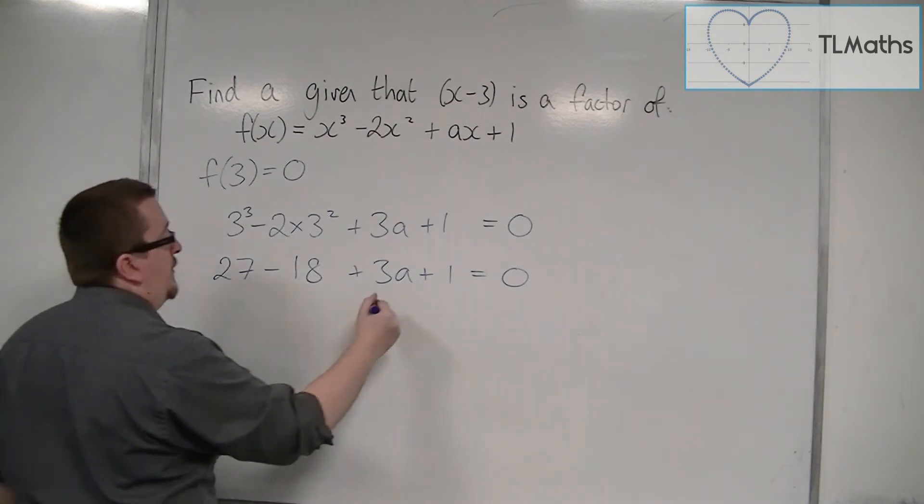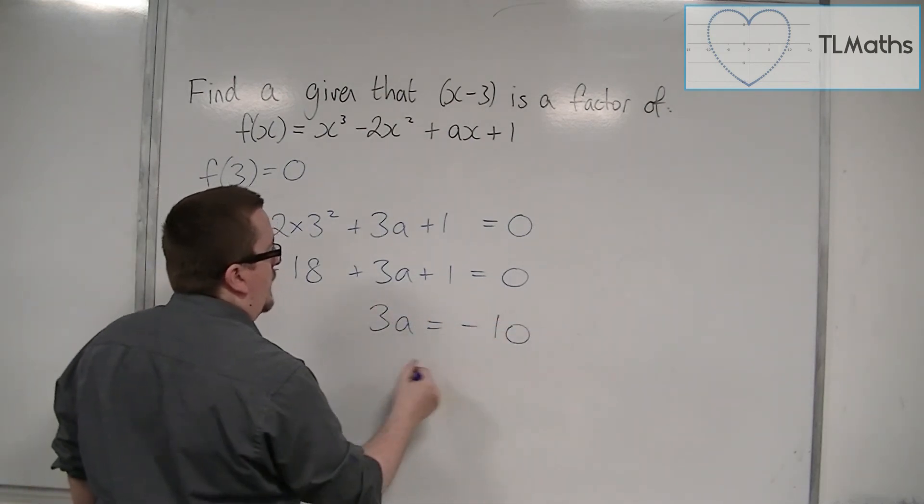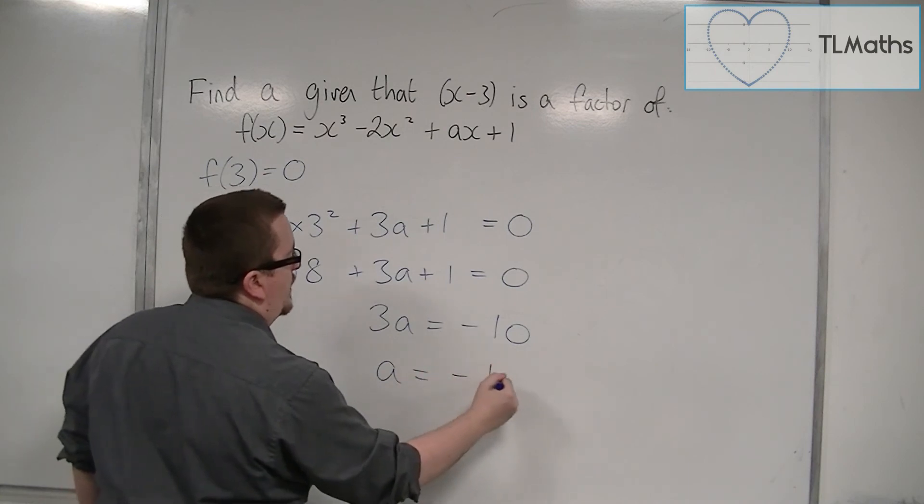Take 10 from both sides, so 3a is minus 10, and so a must be minus 10 thirds.